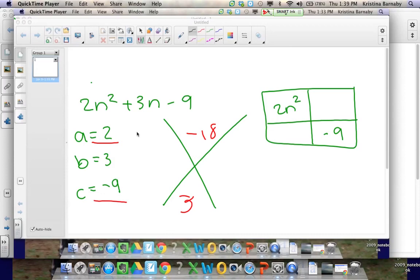So what two numbers multiply to get you negative 18 that if you subtracted would get you to positive 3? That would be 6 and negative 3.